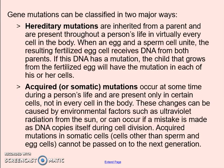Gene mutations can be classified into two main groups. Hereditary mutations are ones that, just like heredity says, are inherited from the parent and passed on to the offspring, so these would be things that the organism is born with. For example, if you are born with sickle cell anemia, that is a disease that is passed on from your parents.